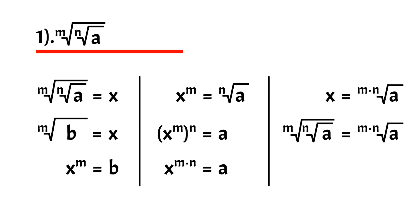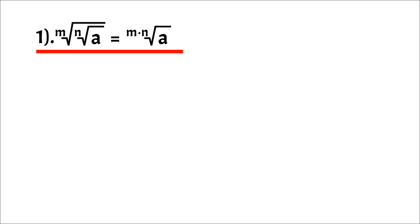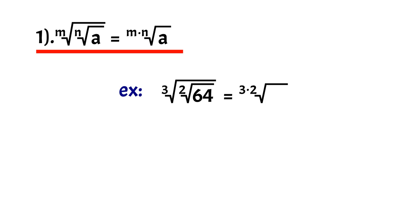Therefore, we can change double root into one with index multiplication of the initial indices. For example, 3rd root of 2nd root of 64 equals 3 times 2th root of 64, which is 6th root of 64, which is 2.